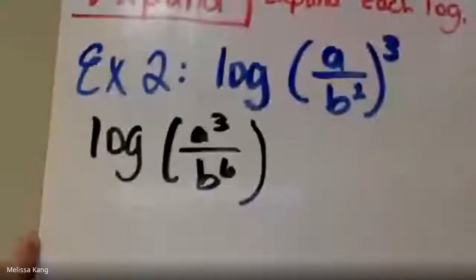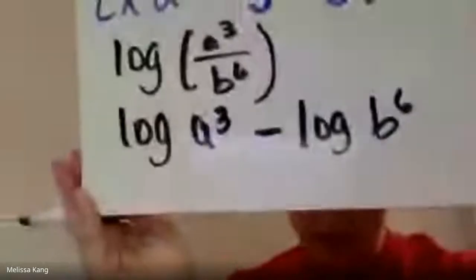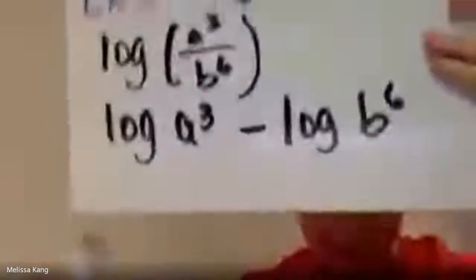Okay, now I have division, so I separate, you know, expand the log by subtraction. So I have log a cubed minus log b to the six. This might be an easier way, just looking at it. And now all I gotta do is move those exponents out front. So I have three times log a minus six, six times log b, and that's that.